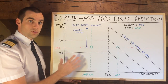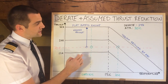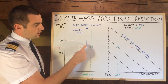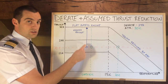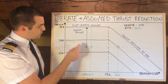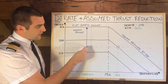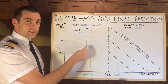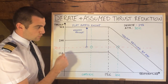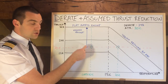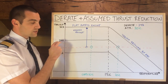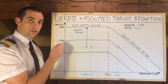From the graph here we can see that if we selected 26k we would have a lot of excess thrust which is not needed. If we selected 24k we would have a little bit of excess thrust. If we selected 22k we would not have enough thrust. So for this takeoff we would select 24k. However there's more to this.